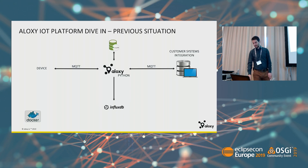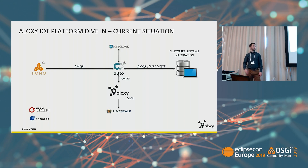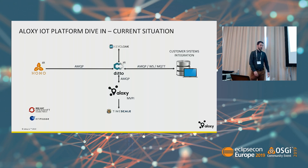This is the current situation. We are now connecting to HONO, and after HONO everything is communicated to Ditto. Ditto is making use of Keycloak now. We have our Aloxy MVP application consuming messages from Ditto and putting them into TimescaleDB and back into Ditto as a digital twin. After the digital twin, we have AMQP, WebSocket, or MQTT communication to make sure that Modbus integrations at customer sites work, and data flows back into customer systems. All of this is running on OpenShift, with Artemis as the communication layer between every service.